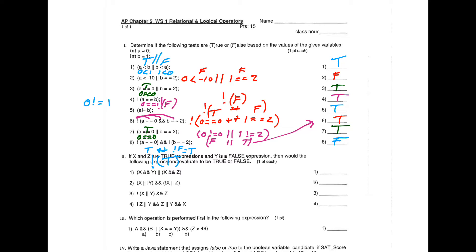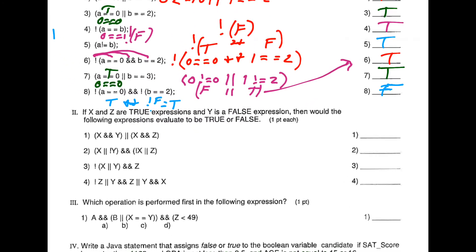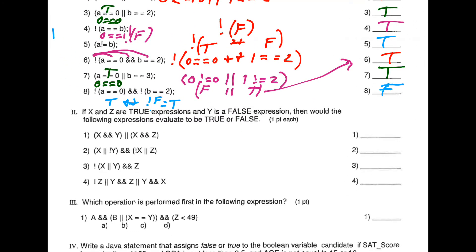Moving on to the next part — I'll go a little faster here. Remember x and z are going to be true, and y is going to be false. So true AND false evaluates as false, and true AND true evaluates as true. False OR true is true.